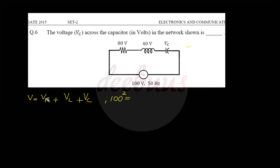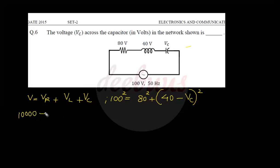VR is the voltage across the resistor, that is 80 volts. The voltage across the inductor is 40 volts minus VC. So 100 squared equals 80 squared plus (40 minus VC) squared. That gives 10,000 minus 6,400 minus 1,600 equals VC squared minus 2 times 40 times VC.